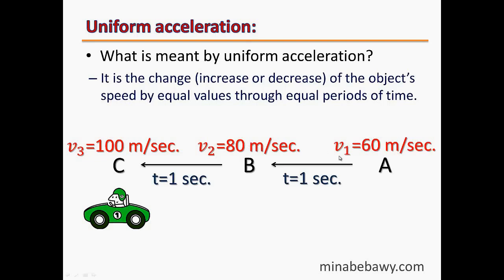The change in speed during the first interval is 20 m/s, occurring in one second. During the second interval, the change in speed is also 20 m/s, also occurring in one second. So this car is moving with uniform acceleration, because the object's speed changes by equal values through equal periods of time — in our case, 20 m/s each second.